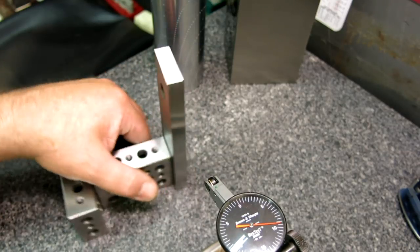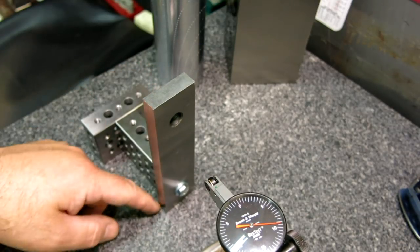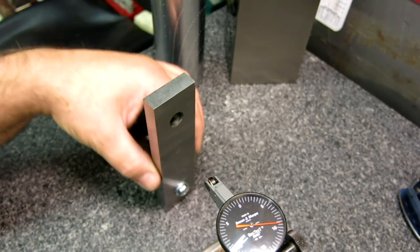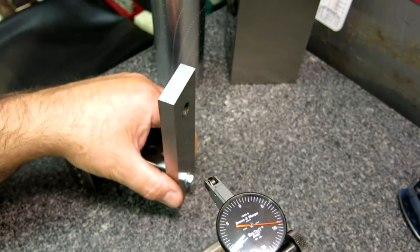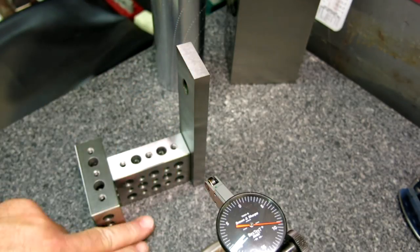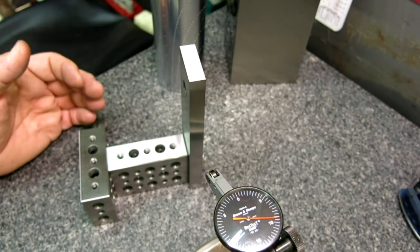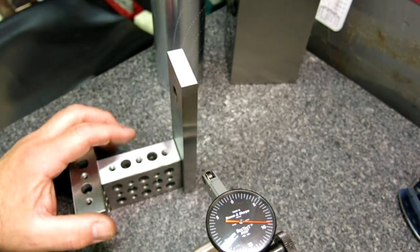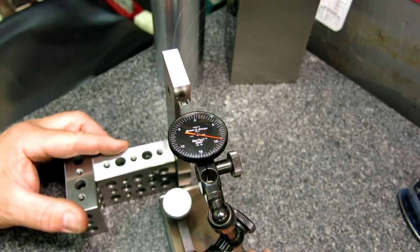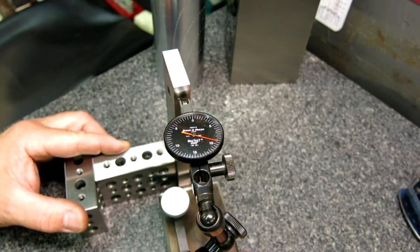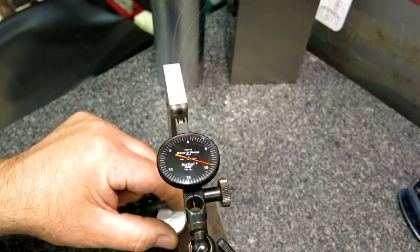All right. So here's our parallel mounted to a 1-2-3 block. And I didn't pay any particular attention to making this square with the surface plate. And so what we're going to do is we're just going to determine how far out of square it is. So we'll bring our comparator up and it's not touching right now. So we'll bring it into contact.